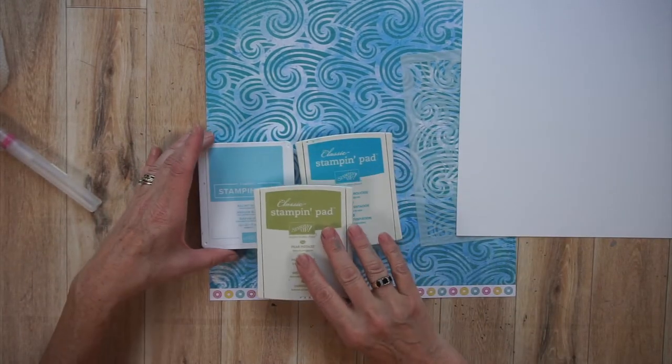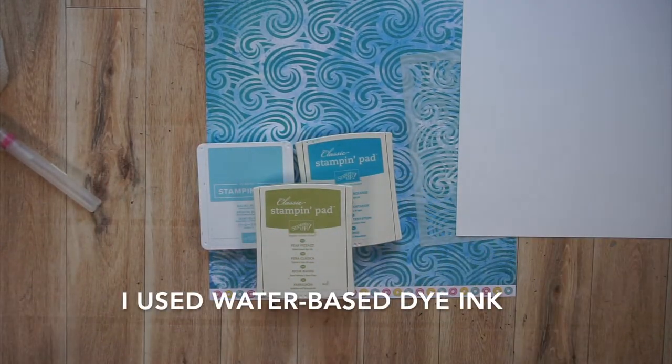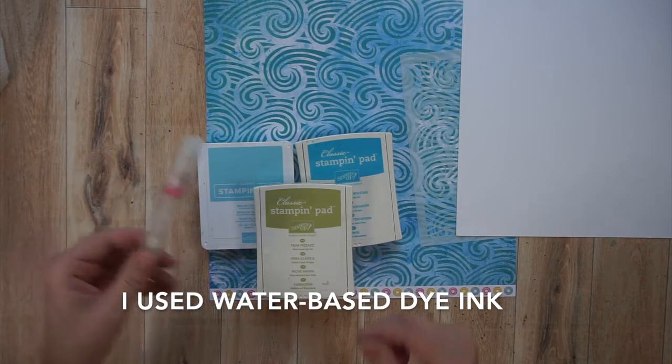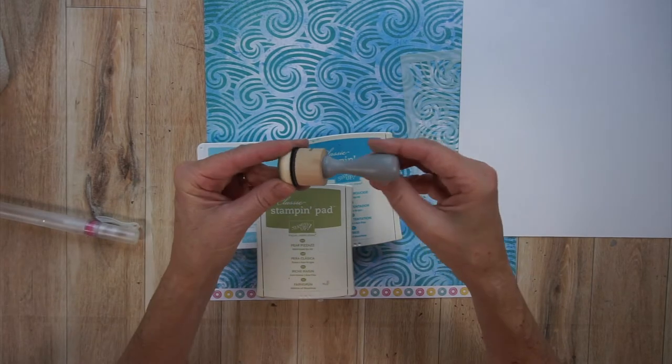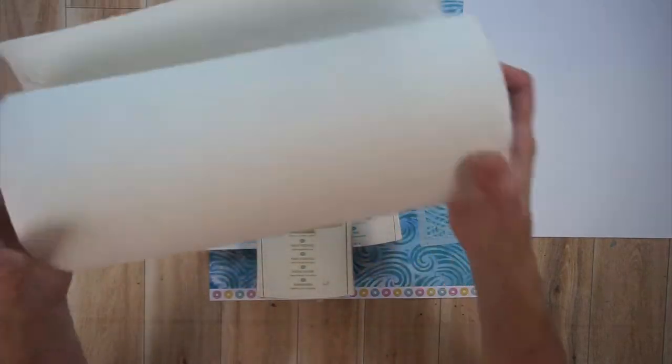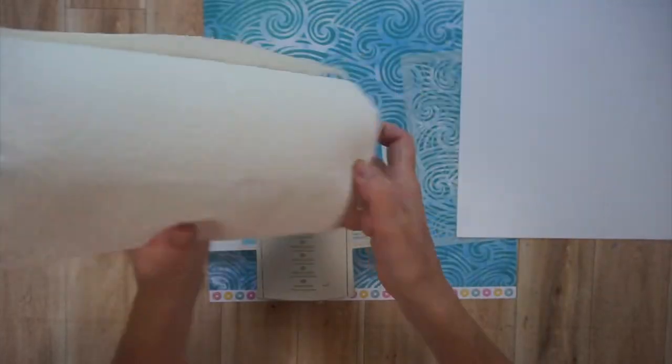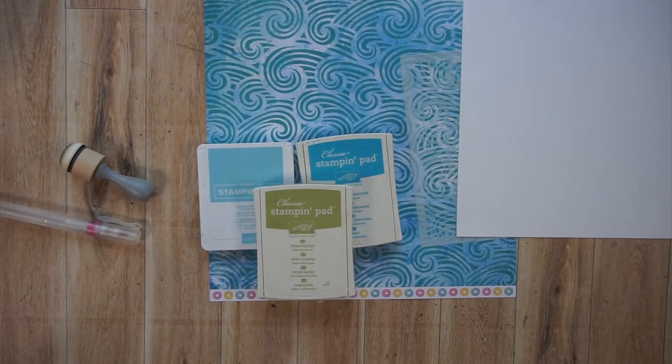For inks I selected three colors from Stampin' Up: Tempting Turquoise, Balmy Blue and Pear Pizzazz. I have a little squirt bottle there, a blending brush and a roll of paper towels. That's it. So now I'm going to show you what I'm going to do.